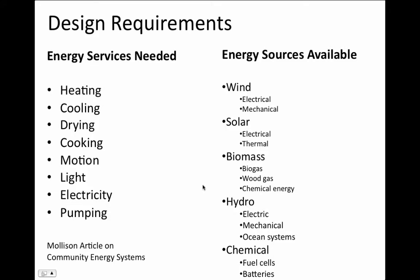Here's another way of thinking about the services we get from energy. When you're thinking about design, rather than thinking about how many solar panels to put in or what kind of wind generator to use, start thinking about what services need to be provided by energy and how we can get those services most effectively — providing maybe better quality of service for a fraction of the energy. It's often possible to provide the same or better services with one-quarter to one-tenth the energy we currently use.